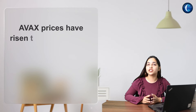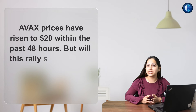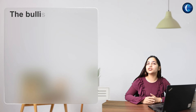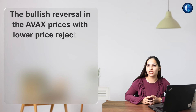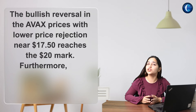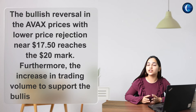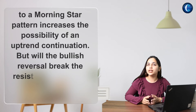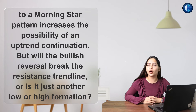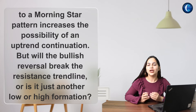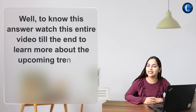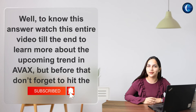AVAX prices have risen to $20 within the past 48 hours, but will this rally sustain or is it just another lower high formation? The bullish reversal in AVAX prices with the lower price rejection near $17.50 reaches the $20 mark. Furthermore, the increase in trading volume supporting the bullish candle leading to a morning star pattern increases the possibility of an uptrend continuation. But will this bullish reversal break the resistance trend line, or is it just another lower high formation? To know the answer, watch this entire video till the end — and before that, don't forget to hit the subscribe button.